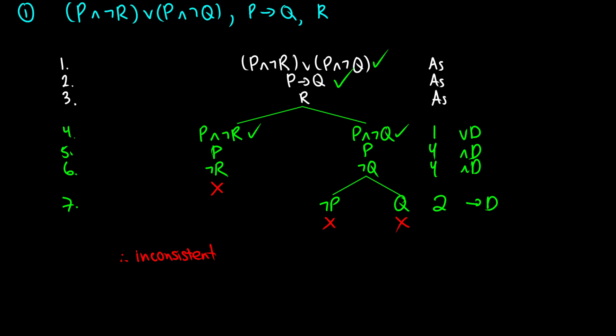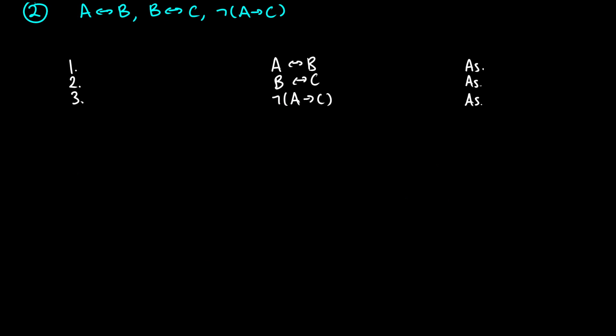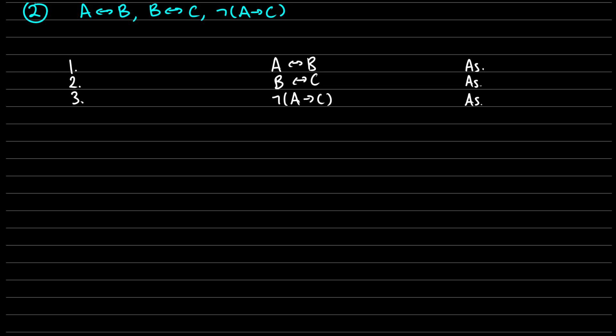Now let's do one with a couple of biconditionals: A if and only if B, B if and only if C, and then not A arrow C. Here we're dealing with only conditionals and biconditionals, basically. I'll put this on to make sure we're nice and consistent.